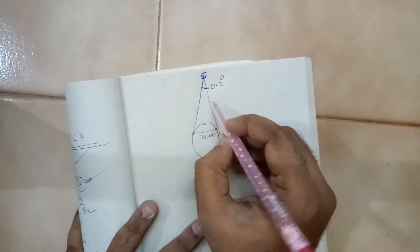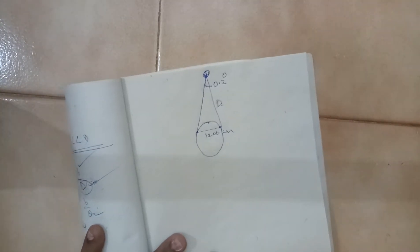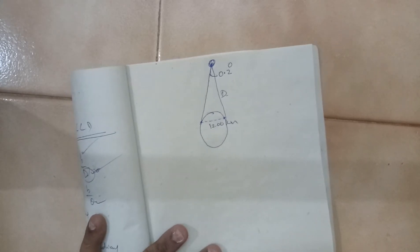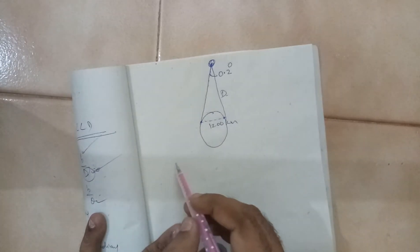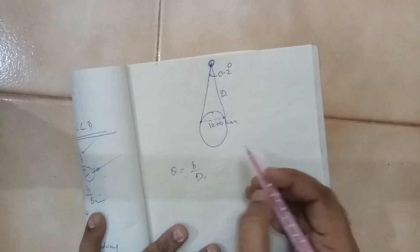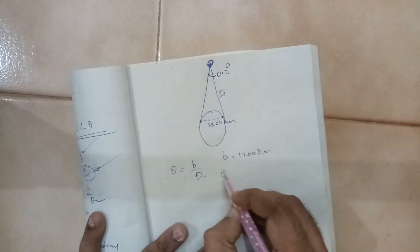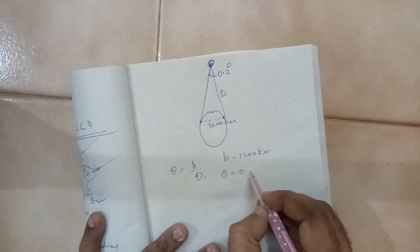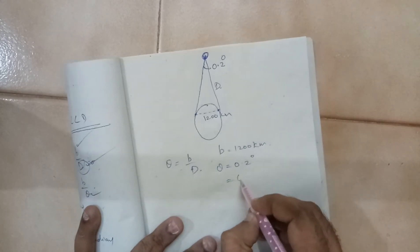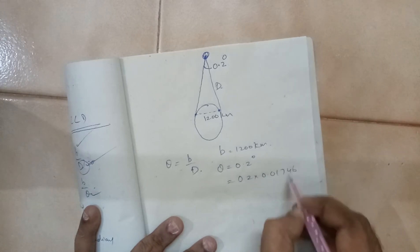We have to find the distance between the moon and the Earth. Here we can apply the parallactic angle formula: theta equals B by D. B is given as 1200 km and theta is 0.2 degrees, which equals 0.2 into 0.01746.